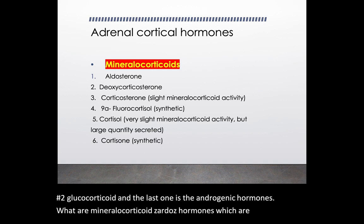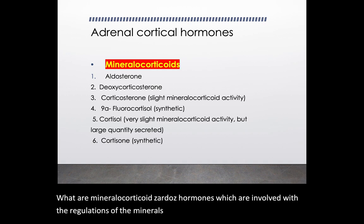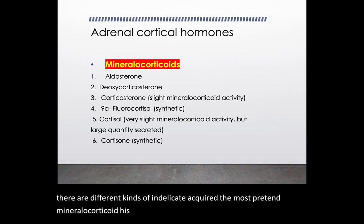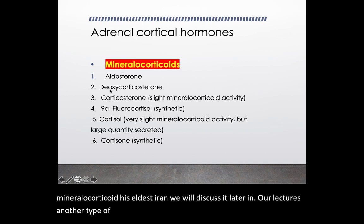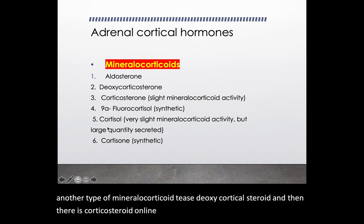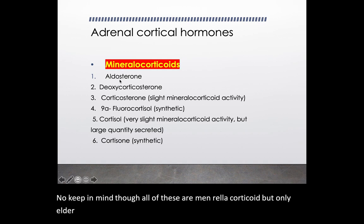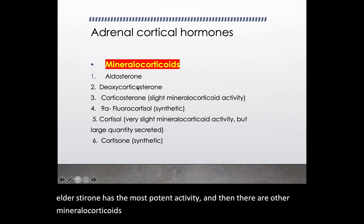There are different kinds of mineralocorticoids. The most potent mineralocorticoid is aldosterone, which we will discuss later. Another type is deoxycorticosterone, then there is corticosterone, 9-alpha corticosterone, cortisol, and cortisone. Keep in mind that though all of these are mineralocorticoids, only aldosterone has the most potent activity.